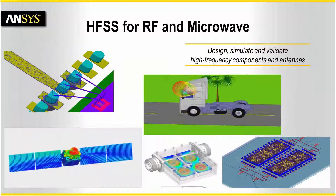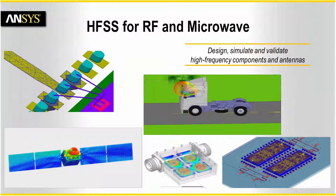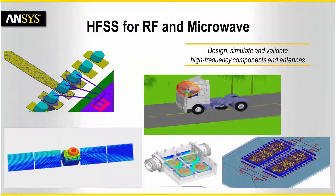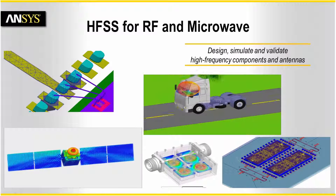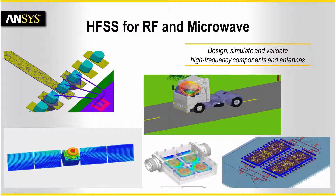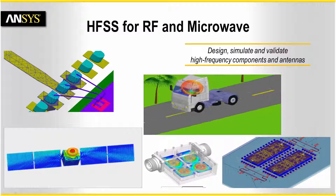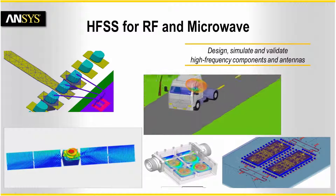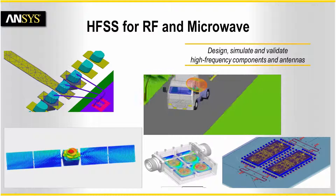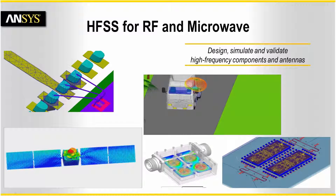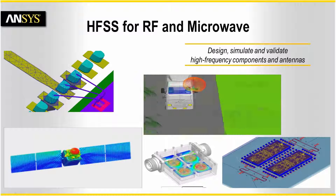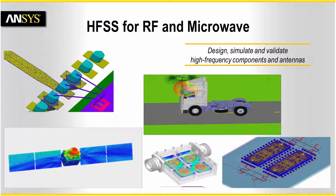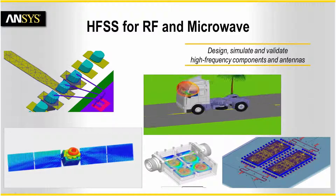For RF and microwave, HFSS is used to calculate antenna radiation, radar cross-section, microwave circuits and parasitics, biomedical simulations, and more. The 3D modeler is used for full 3D geometries, and the 3D layout editor is used for planar microwave circuits.